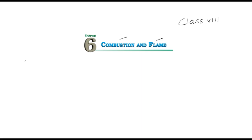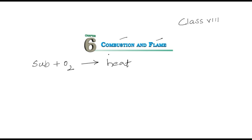In the previous video tutorial, we learned the meaning of combustion. Combustion is the chemical process that occurs when a substance reacts with oxygen and gives heat, and sometimes light also. All substances which can combine with oxygen and give heat and light are combustible substances, and the rest which cannot are non-combustible substances.